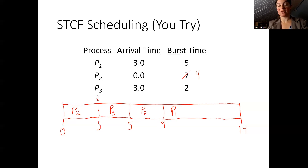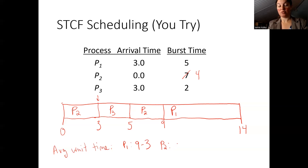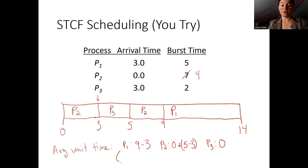Calculating average wait time: process one entered at time three but didn't run until time nine, giving a wait of six. Process two entered at time zero and was immediately scheduled, but was kicked to the ready queue at time three and not scheduled again until time five, giving a wait of two. Process three did not wait at all, scheduled immediately when it entered. Our average wait time is six plus two plus zero, divided by three, for a total of eight over three.